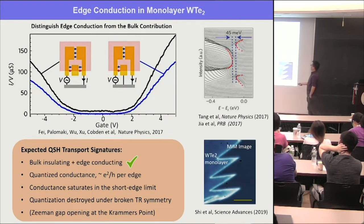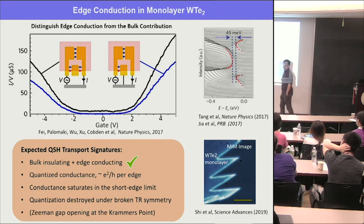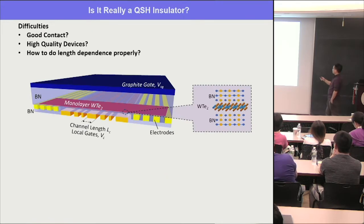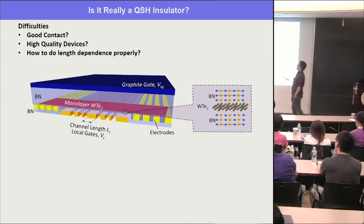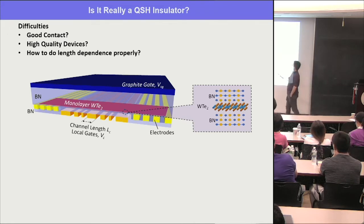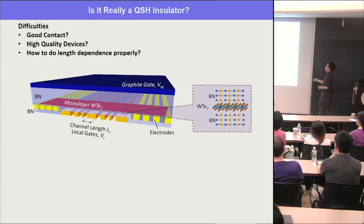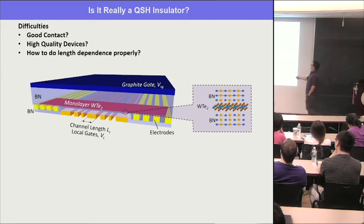The real thing we want to show is whether it's truly quantized to the expectation for a helical edge mode — a key signature for quantum spin Hall effect. To do that, you have to overcome some difficulties. You want very good contact to this 1D edge mode system, high-quality devices to see intrinsic effects, and you want to check the length dependence so you know you're in the ballistic region. In the ballistic region, you want to see quantized conductance to demonstrate it's not by accident.